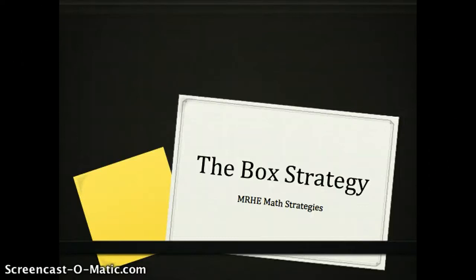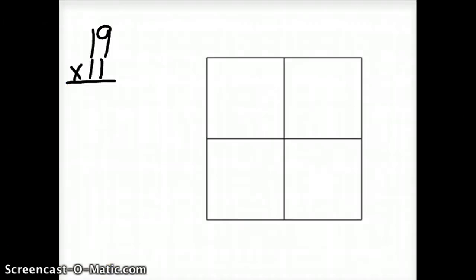In this video, we're going to take a look at the multiplication box strategy, which is very similar to the open array strategy that students begin with. We're going to use the box strategy to solve the same multiplication problem, 19 times 11.